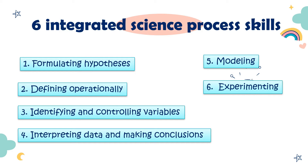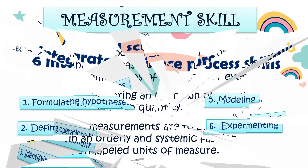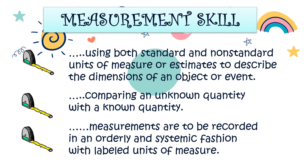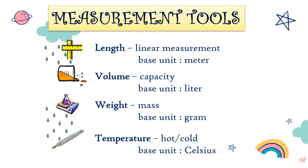Now I will explain some of them. The first one — measurement skills: using both standard and non-standard units of measure to describe the dimensions of an object or event, and comparing an unknown quantity with a known quantity. Measurements are to be recorded in an orderly and systematic fashion with level units of measure. Examples include measurement tools for length — linear measurement, base unit: meter.